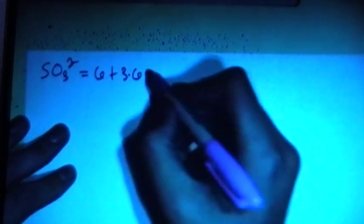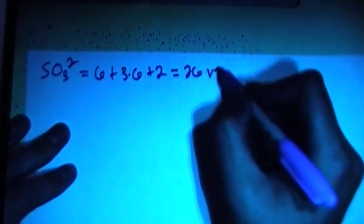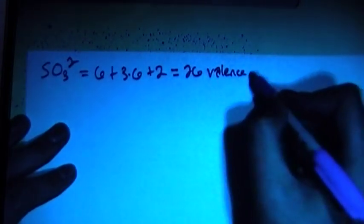Each giving us 6 valence electrons, plus the 2 more electrons for the charge. So that's going to give us a total of 26 valence electrons.